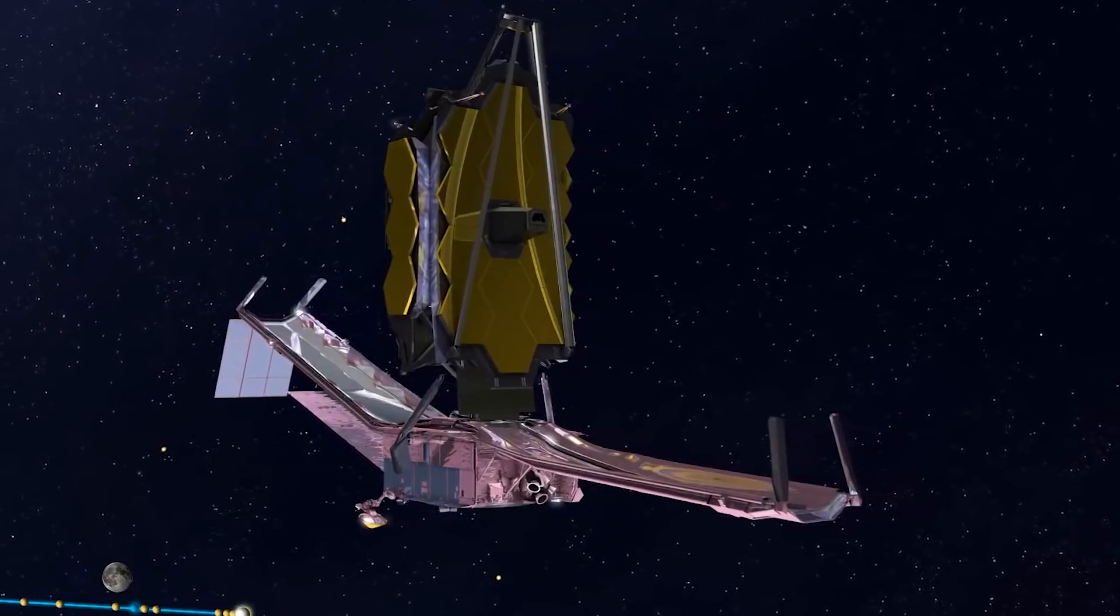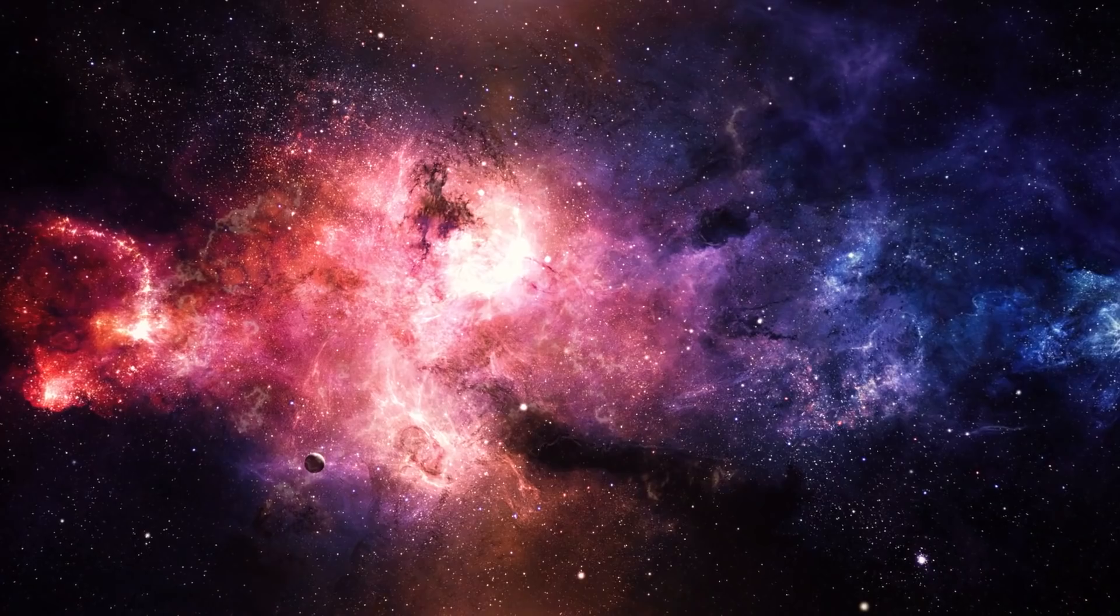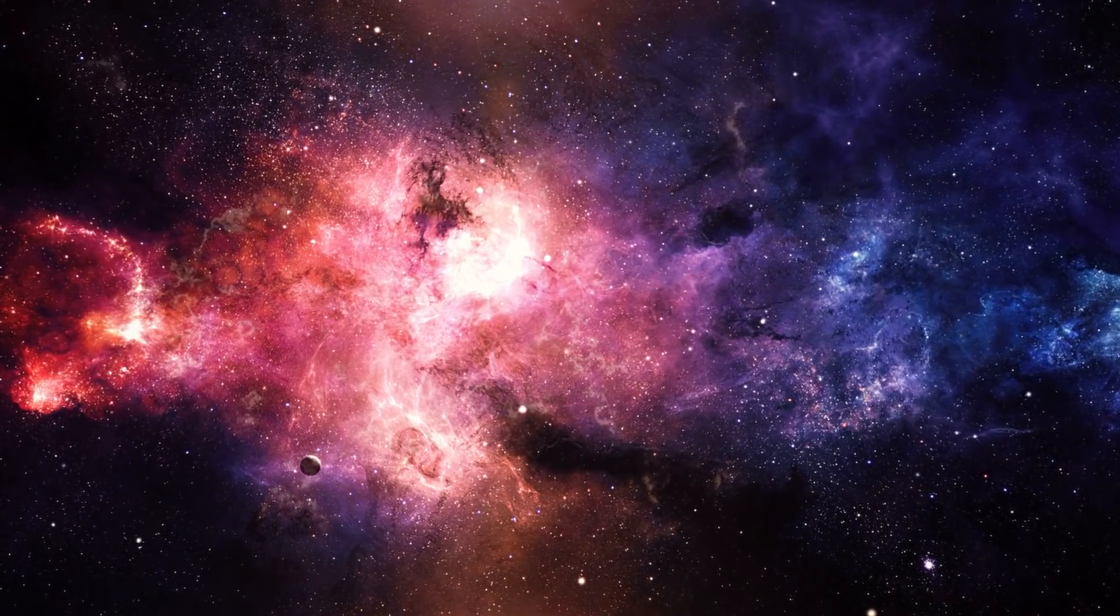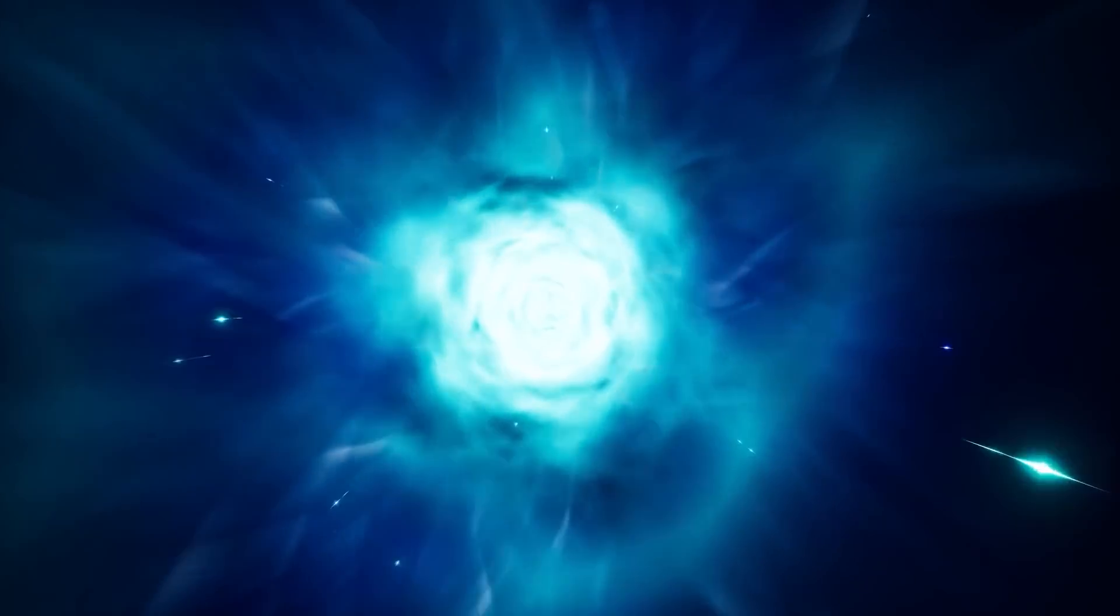The goals of the James Webb Telescope mission can be broken down into four segments. Number one is to see into the past to spot the stars and galaxies that were there in the first place right after the Big Bang.